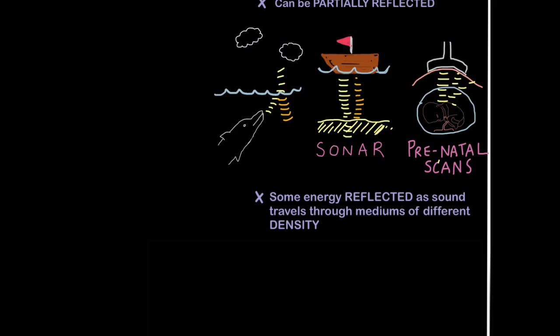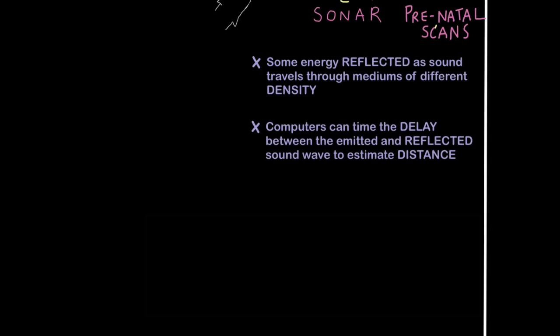So to put it into words, some energy gets reflected as sound travels through mediums of different density. Remember, when sound gets reflected, we call it an echo. Computers can time the delay between the emitted and reflected sound wave to estimate the distance of an object. Animals can do this too. That's how bats and dolphins echolocate.